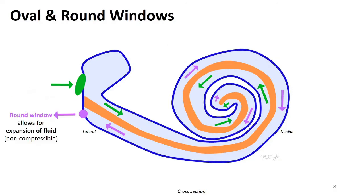This leads to movement of the fluid within the cochlear duct, which is called endolymph. The round window comes into play here as we think about the functioning. You've pushed these pressure waves along the way, and to dissipate or allow for this expansion, the round window will expand into the air-filled middle ear. This dissipates the pressure waves from the fluid within the cochlea out into the air-filled space of the middle ear.